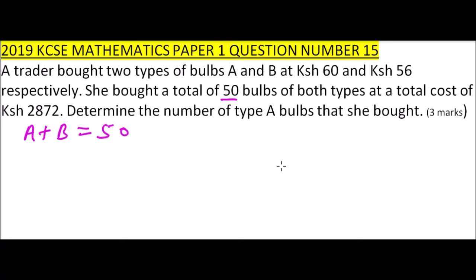The bulb of type A was bought at 60 shillings and type B at 56 shillings, and the total cost came to 2872. So this means that 60a plus 56b should give you 2872. So these are our two linear equations.